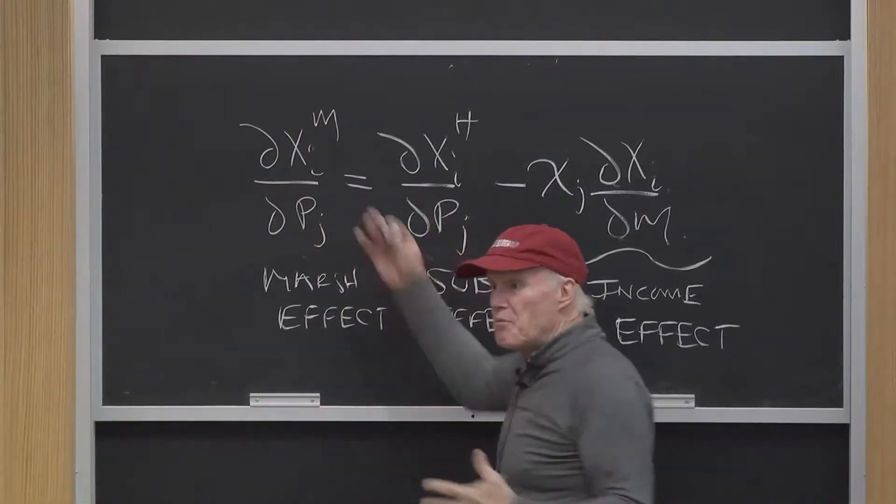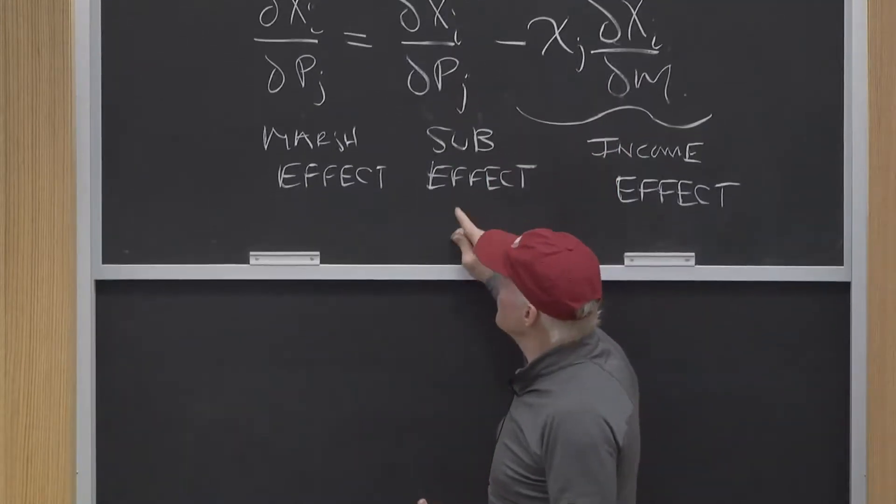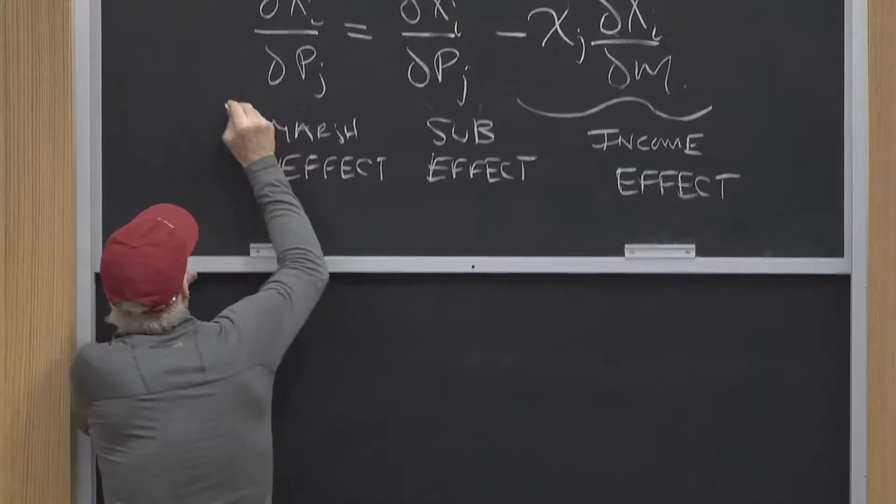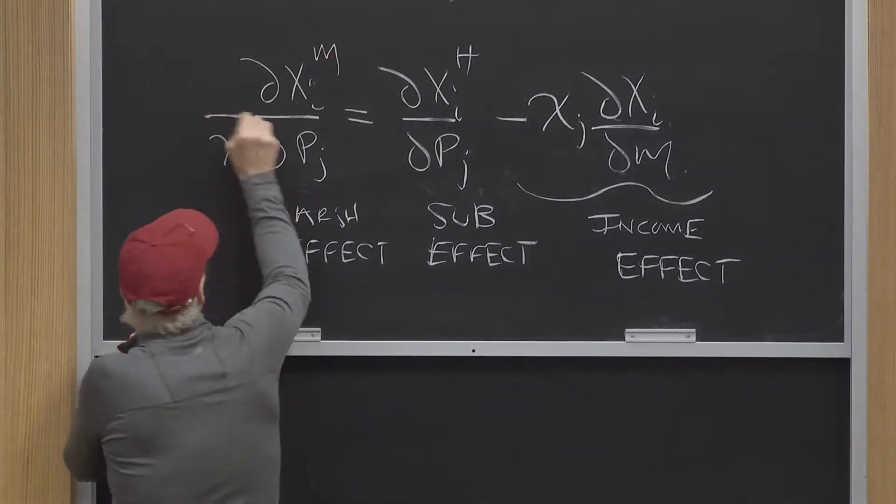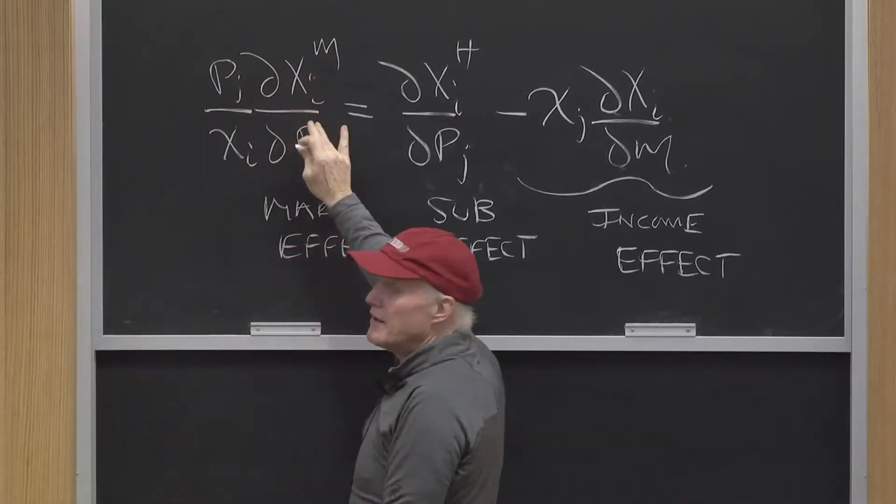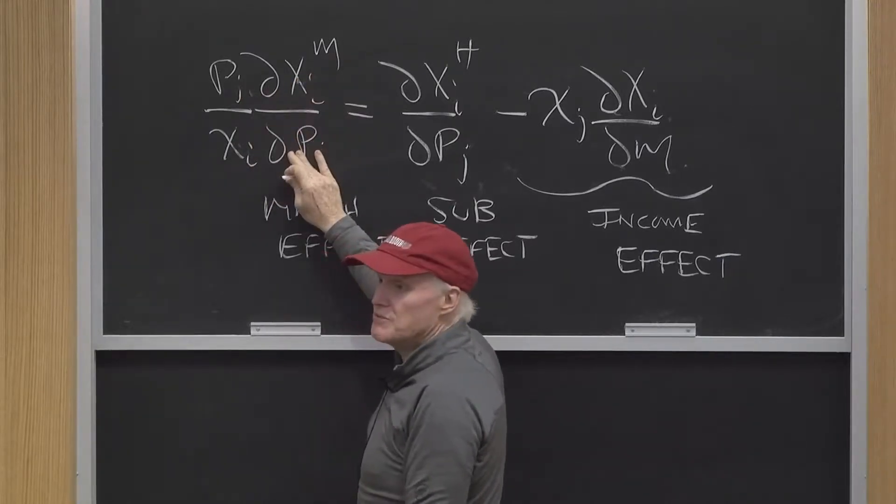now most commonly we put these in terms of elasticities. So let's put this formula in terms of elasticities. I want to make this an elasticity. I put an xi here and I put a pj here. That's going to make this into an elasticity because it's going to be the percentage change in quantity over the percentage change in price.